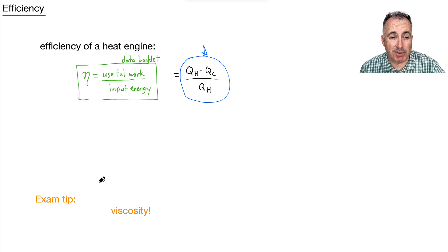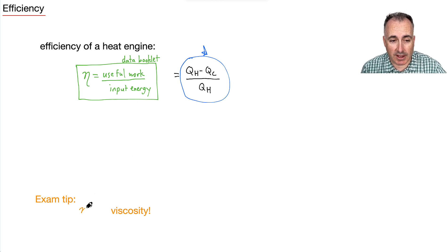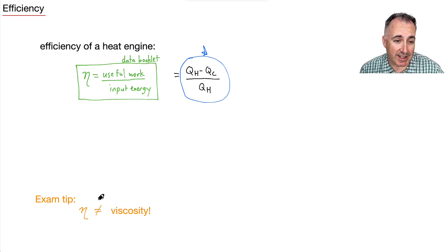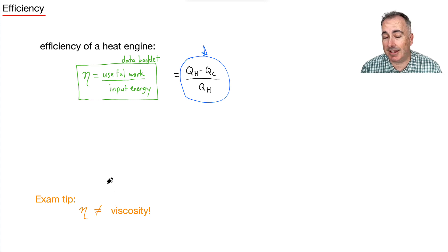One small note: this symbol here is not the same as the viscosity symbol, so just keep that in mind. We're using a different version here — this is the efficiency of any heat engine.